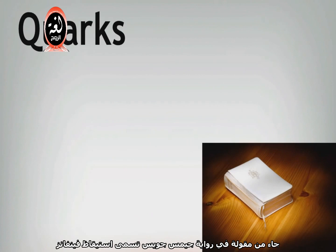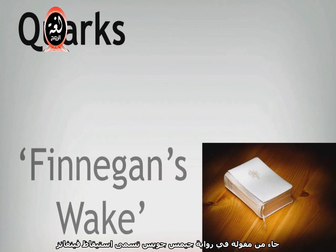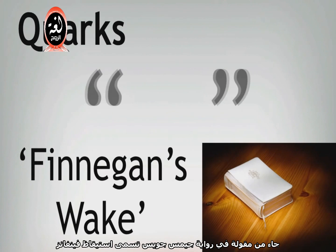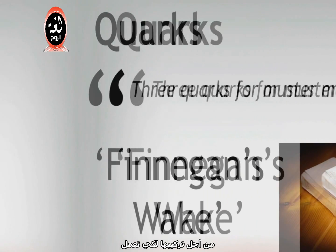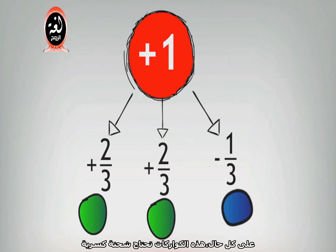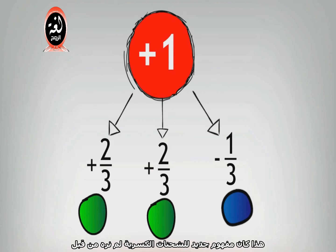The name Quarks was chosen from the James Joyce novel Finnegan's Wake: 'Three Quarks for Muster Mark.' In order for their calculations to work, however, these Quarks needed to have a fractional charge. This was a new concept, as fractional charges had never been seen before.